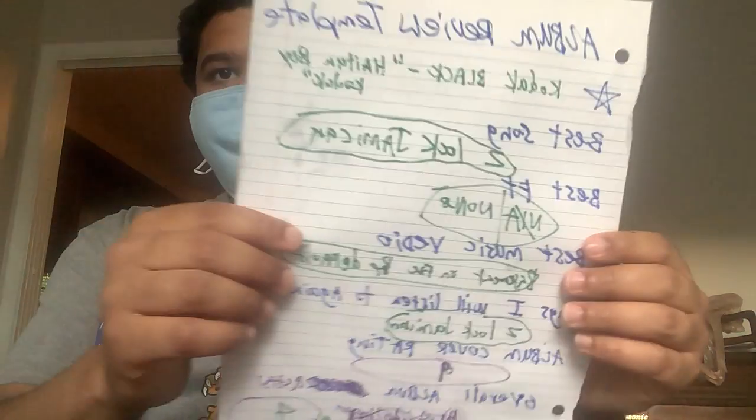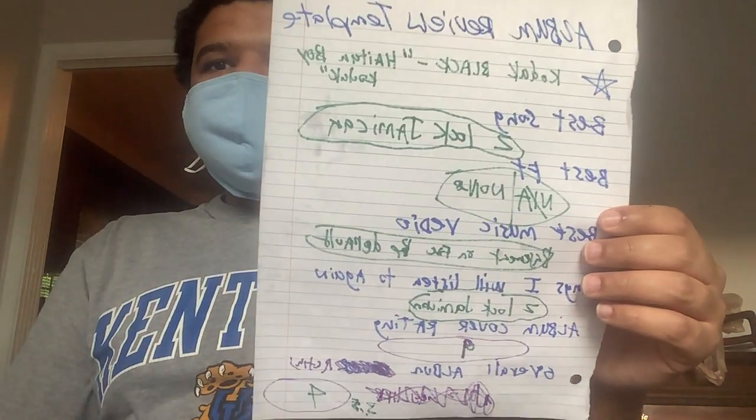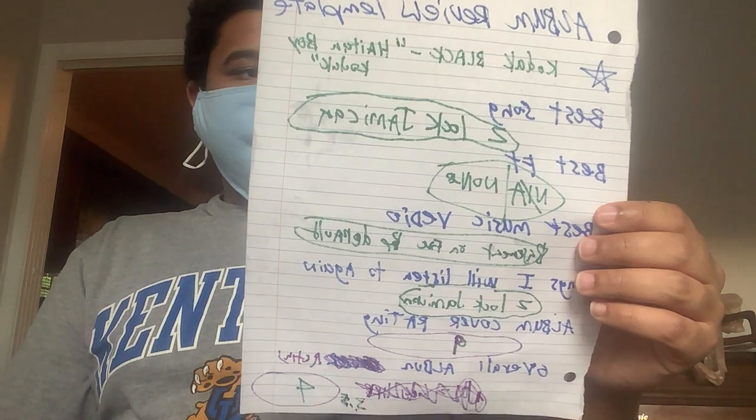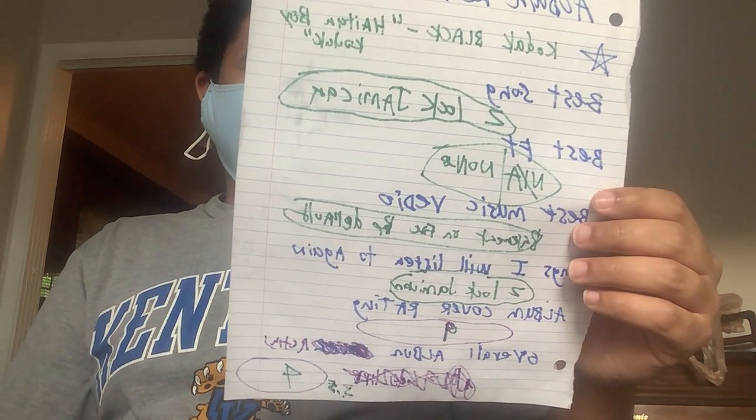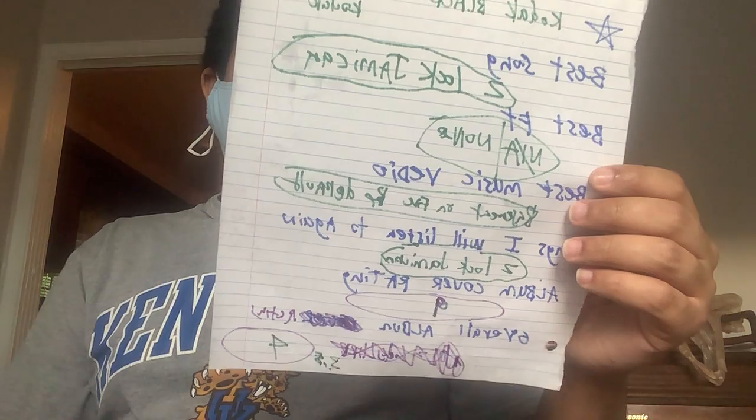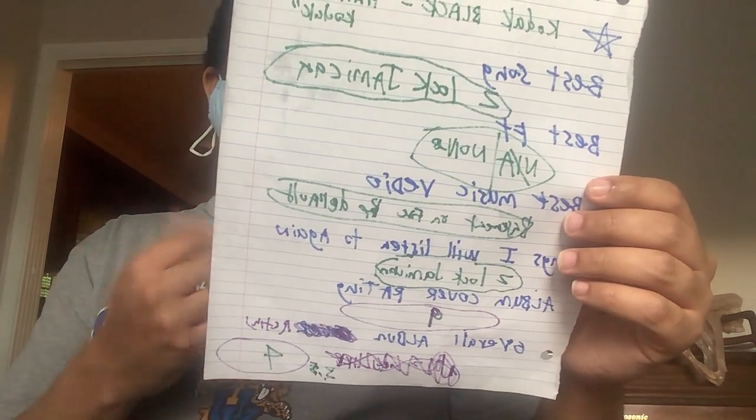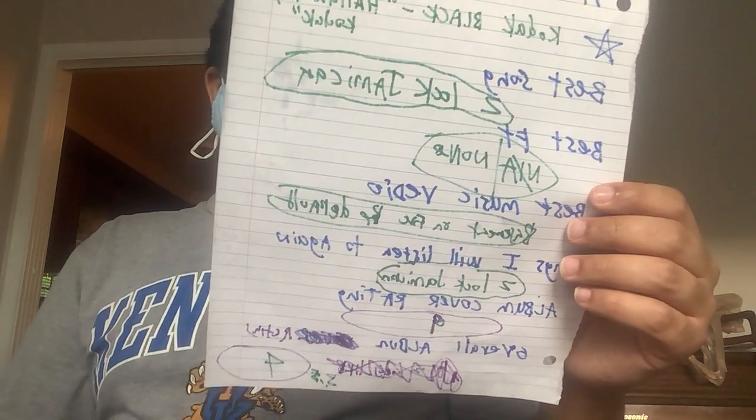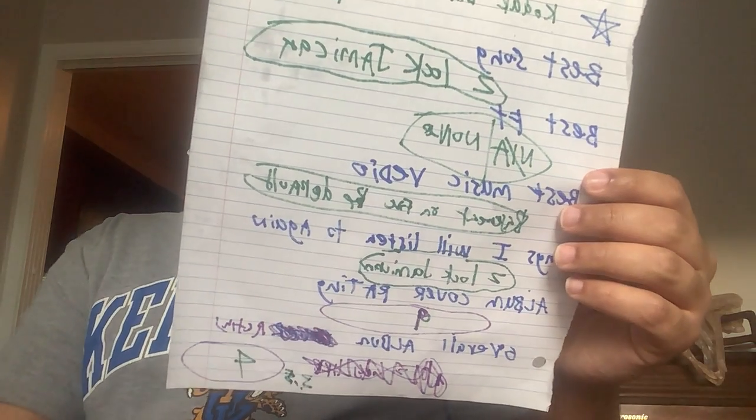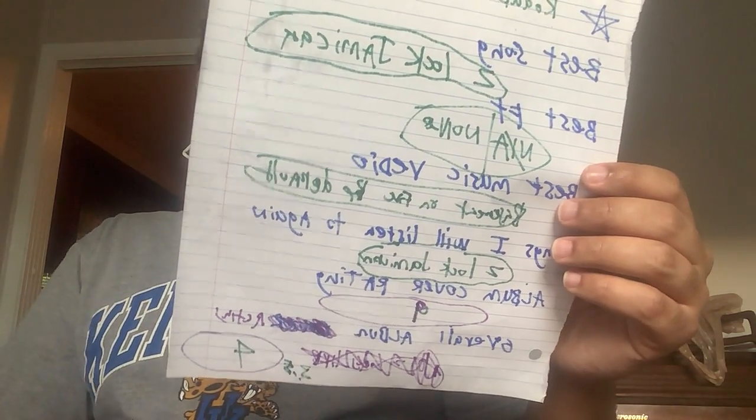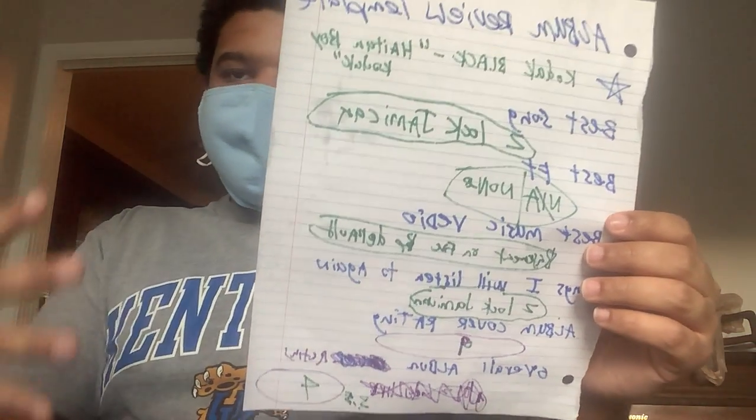We're gonna go to the template. Best song: Zoe Lock Jamaican. Best feature: 9ine. Best music video—there's only one, so Bible Basement on Fire. Songs I'd listen to again: Zoe Lock Jamaican. Album cover rating: nine. Overall album rating—all the songs average out to a score of four.